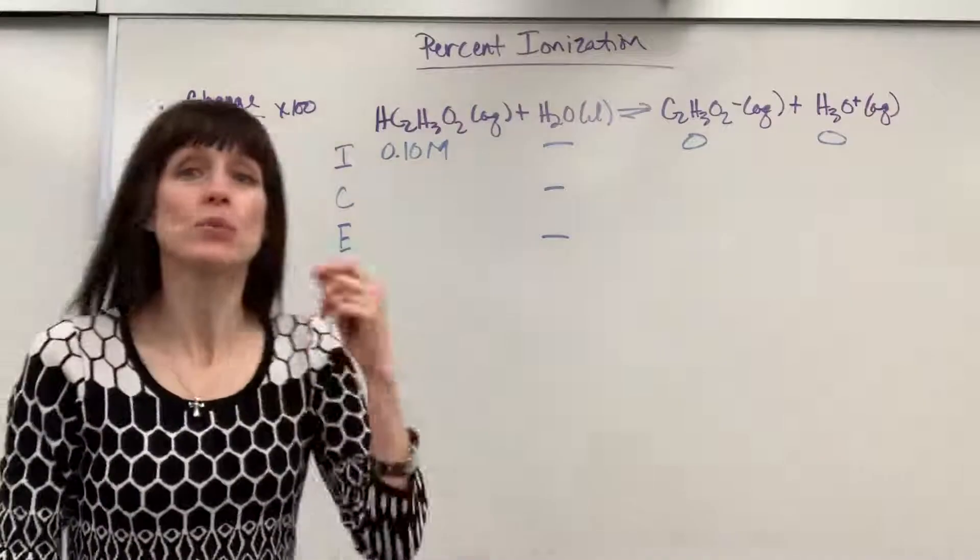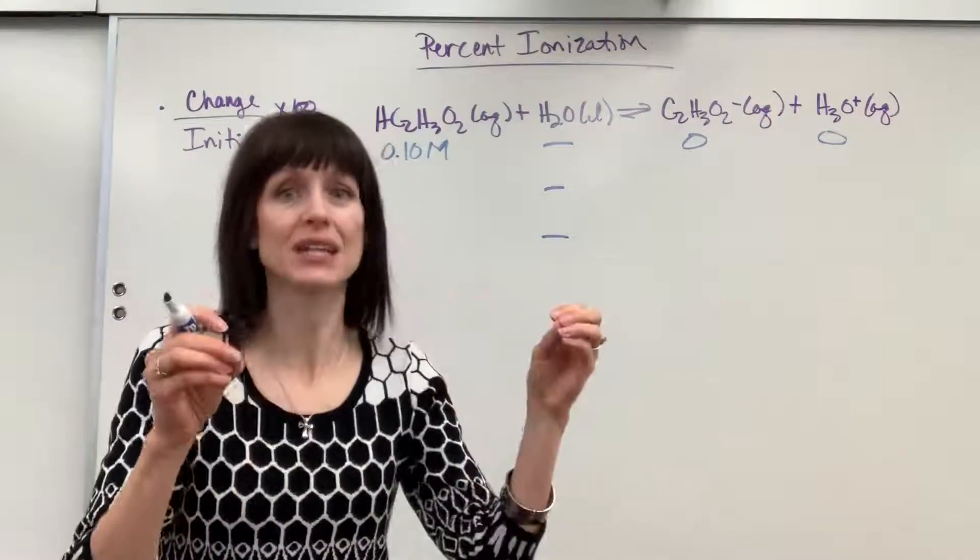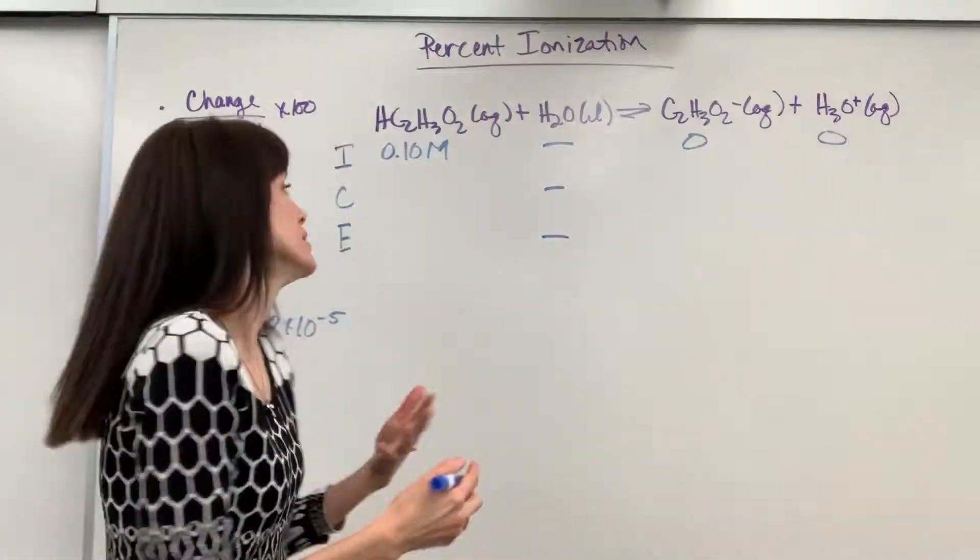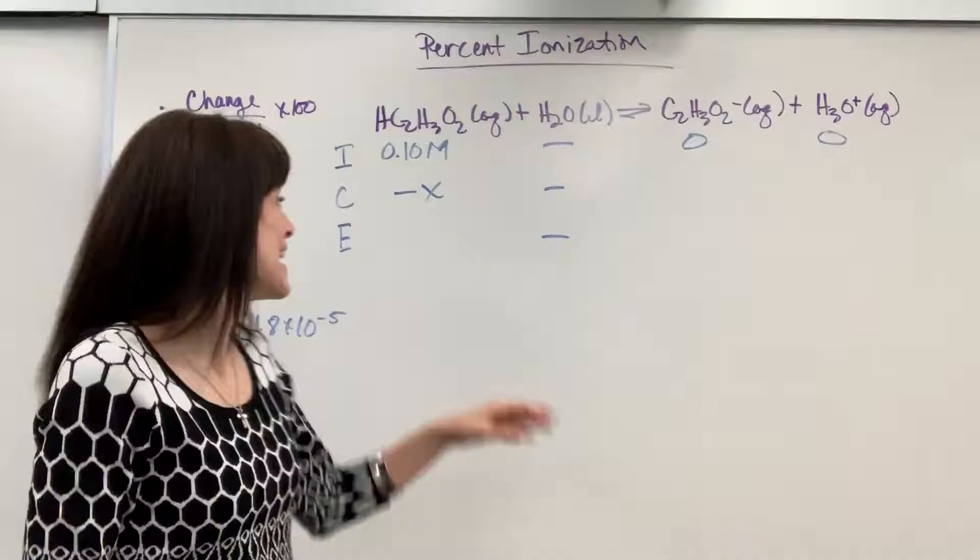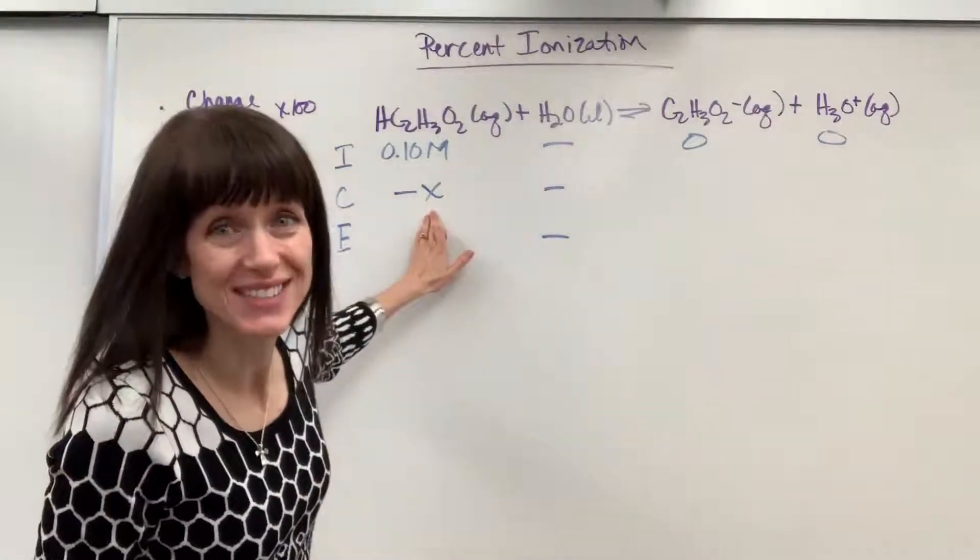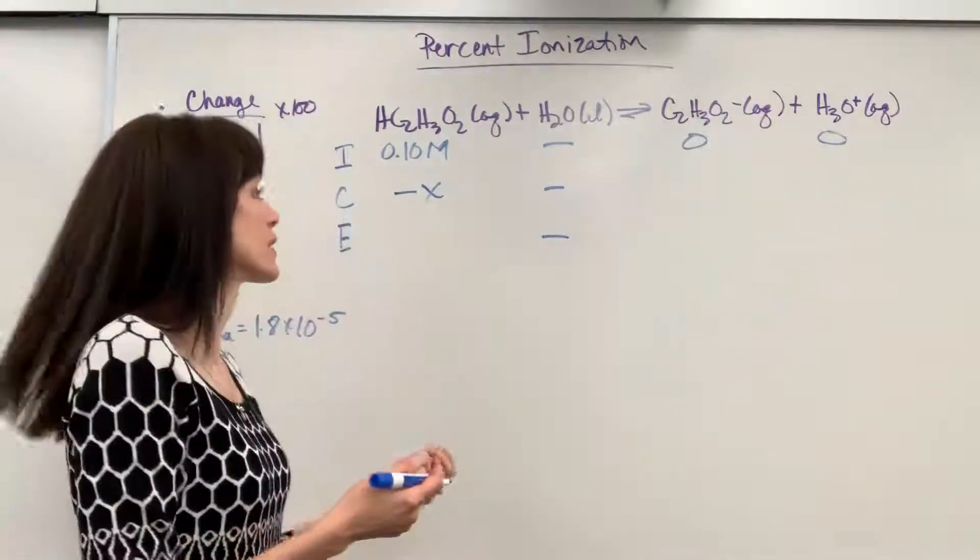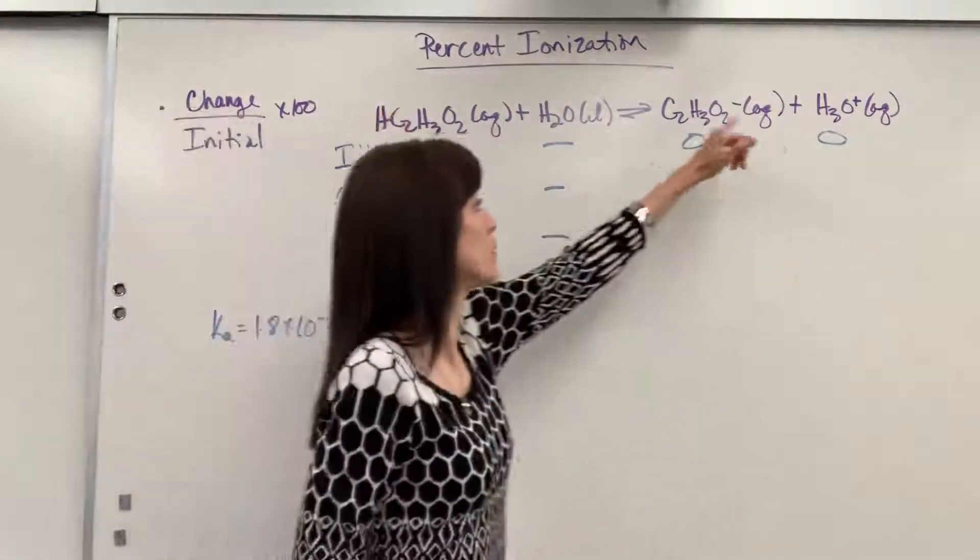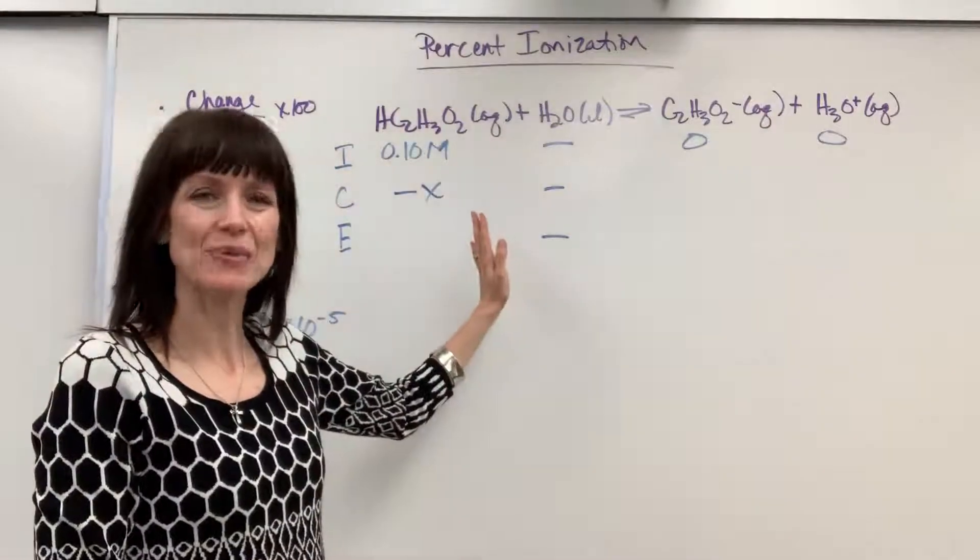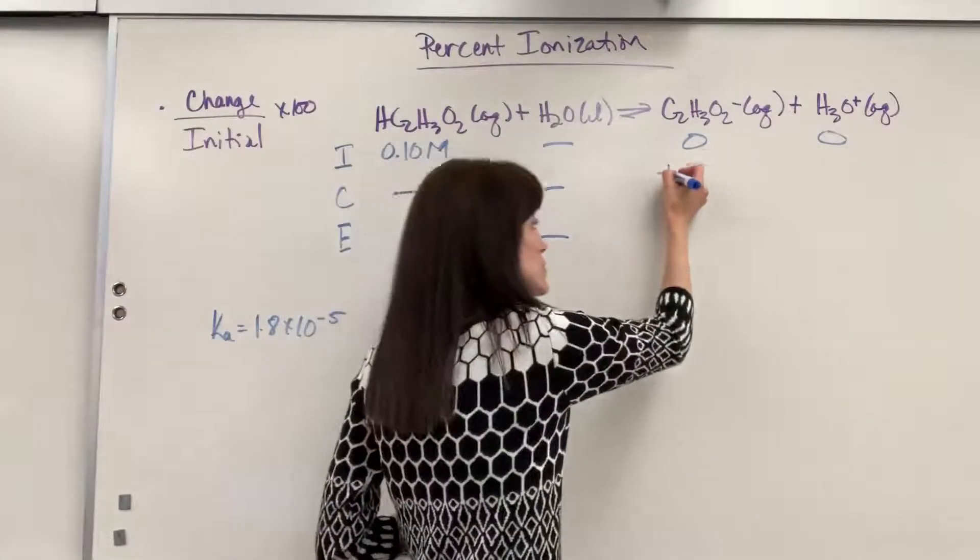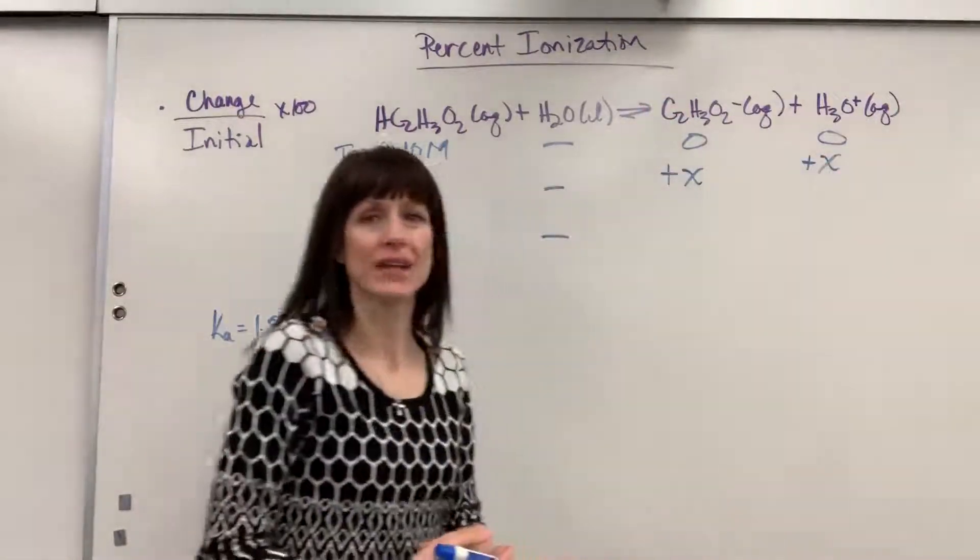Now this is a weak acid which means it will only partially ionize. It's only going to partially break apart. We don't know the amount, so we say minus x. Some amount is going to be consumed. That's the ionization amount. So some amount is going to break apart and react with this water. Now I always look at the molar coefficients. For every one mole that I lose of the acetic acid, it's going to produce one mole of the acetate ion and one mole of the hydronium.